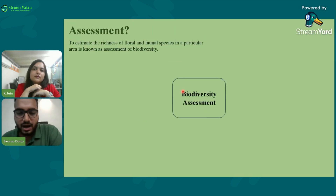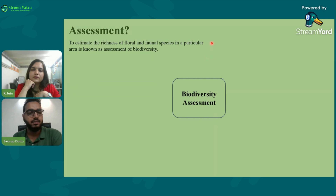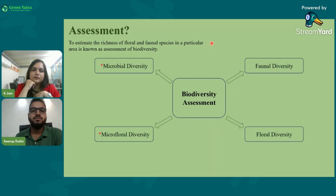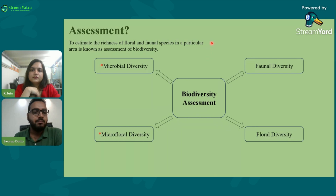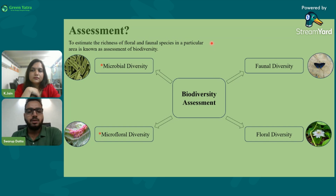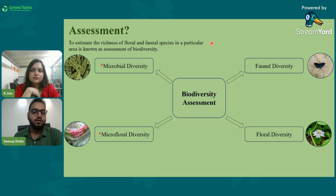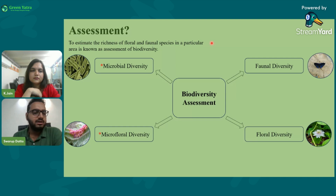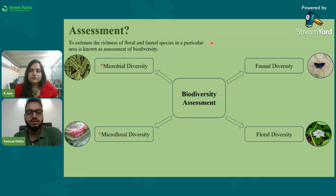When we talk about biodiversity assessment, it involves the assessment of faunal diversity, floral diversity, microbial diversity, and microfloral diversity. In a quick assessment method, we generally assess only faunal and floral diversity. For a detailed biodiversity assessment, we also consider microbial diversity and microfloral diversity. Microfloral diversity refers to the diversity of fungi, and microbial diversity refers to bacteria and other microscopic organisms.